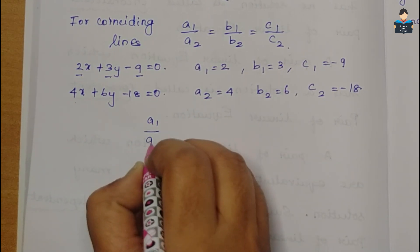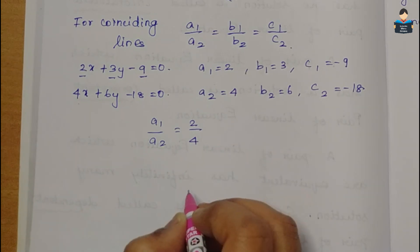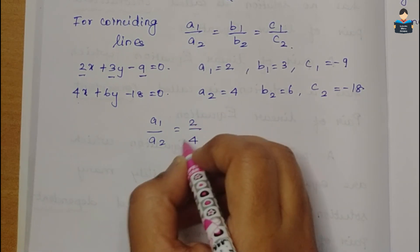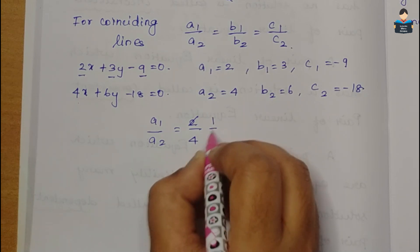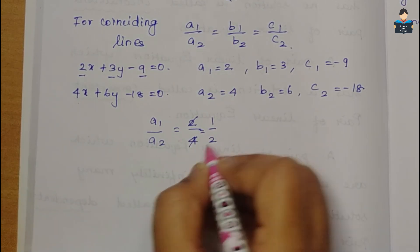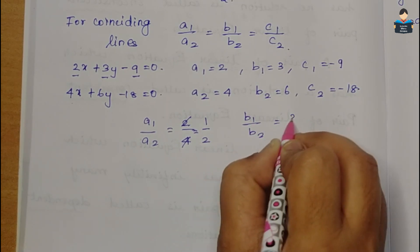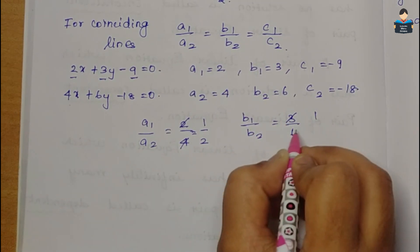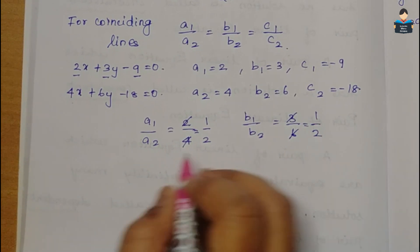We form a1/a2 = 2 by 4. Simplifying: 2 times 1 = 2, 2 times 2 = 4, so a1/a2 = 1/2. Next, b1/b2 = 3 by 6. Simplifying: 1 times 3 = 3, 2 times 3 = 6, so b1/b2 = 1/2 also.